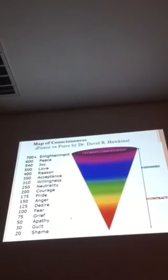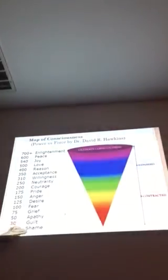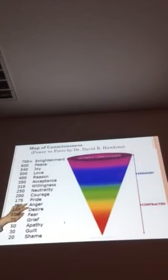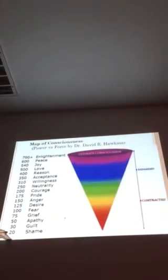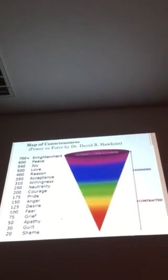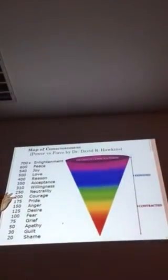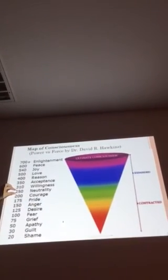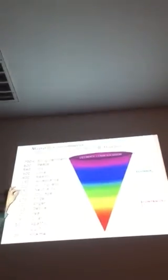And then guilt also that, and then fear, anger. This kind of thing is very, very low level. Pride is also low, 175. Pride is not a good one. Courage is 200, and then neutrality. Neutrality, he said, is the center. Neutrality means doesn't think anything. This is the level. That means courage and pride is lower.